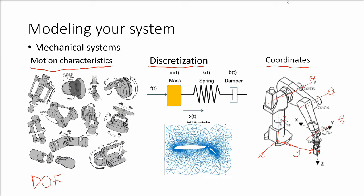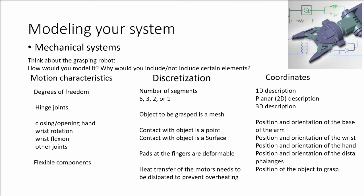I want to make a pause here for you to think about that grasping robot. I'd like you to answer: how would you model it? I've listed different considerations you could decide to include or not, across three categories — motion characteristics, discretization, and the coordinates of the system. Think about why you would include different aspects of the model and in what situations you would include them.